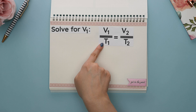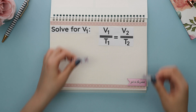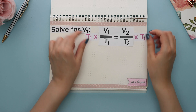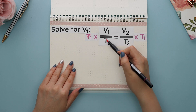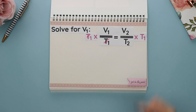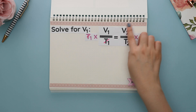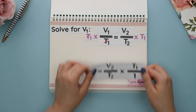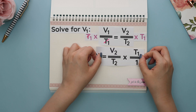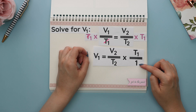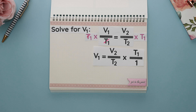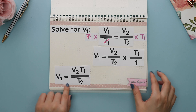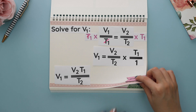Here's another gas law. Let's solve for V1. V1 is here, and what's not allowing it to be by itself is its denominator T1. So we perform the opposite operation and multiply both sides by T1. The T1's cancel, and looking at the right side we can combine this — remembering there's actually a 1 as our denominator — and multiply straight across to get our answer for V1.